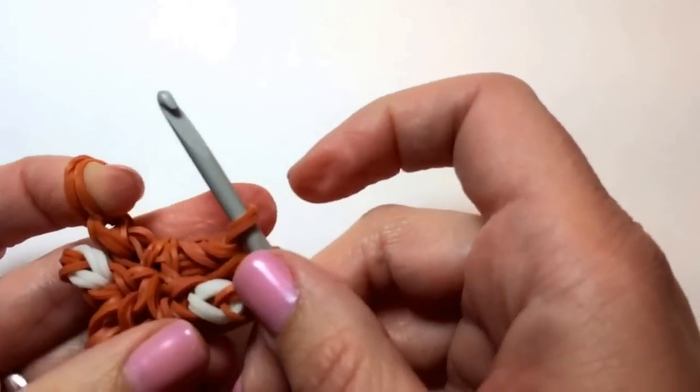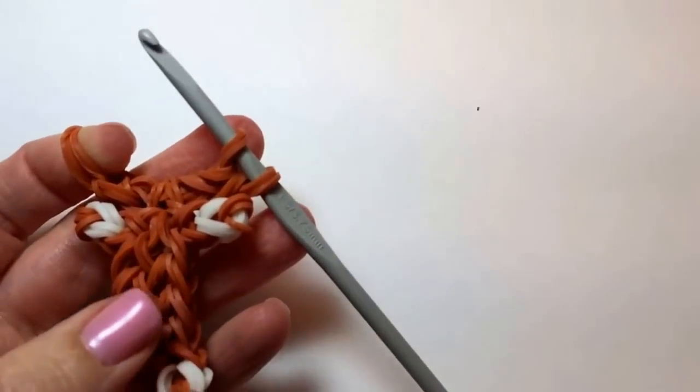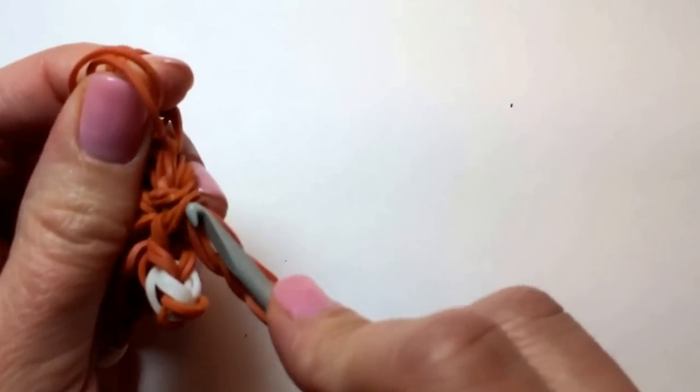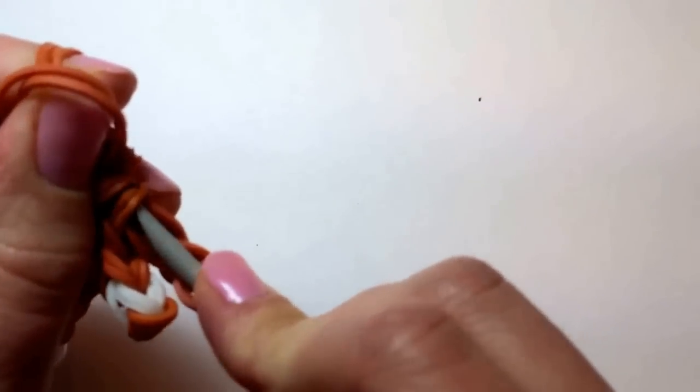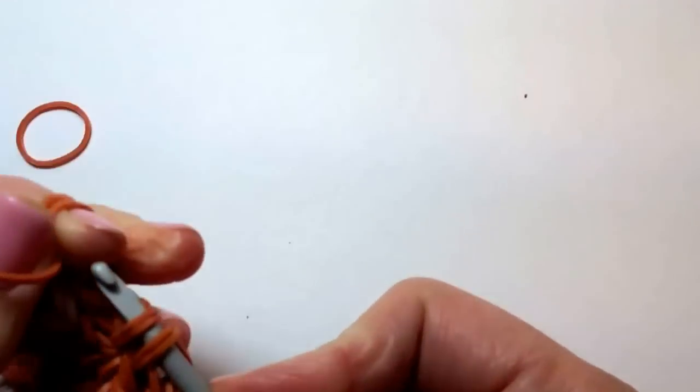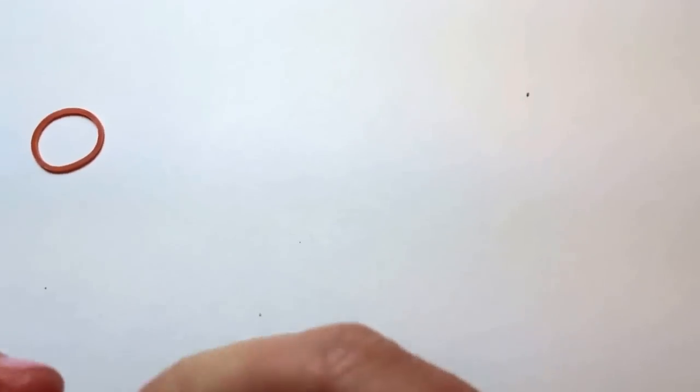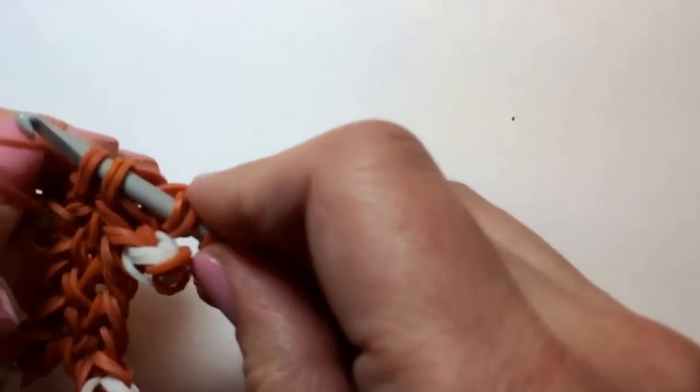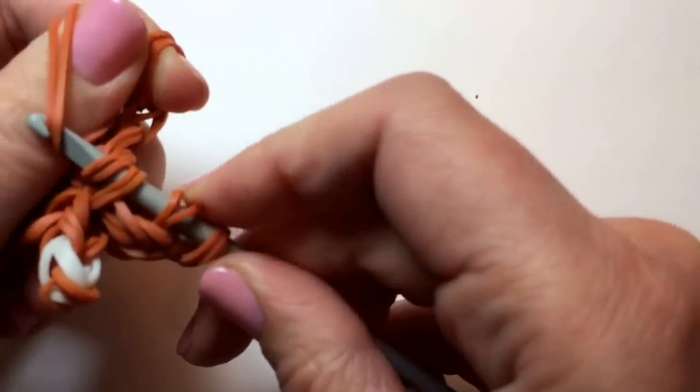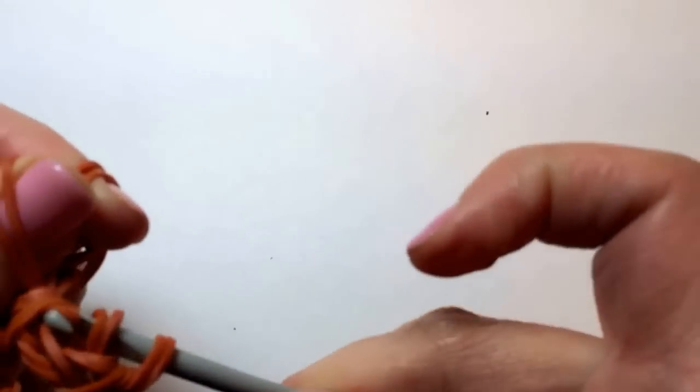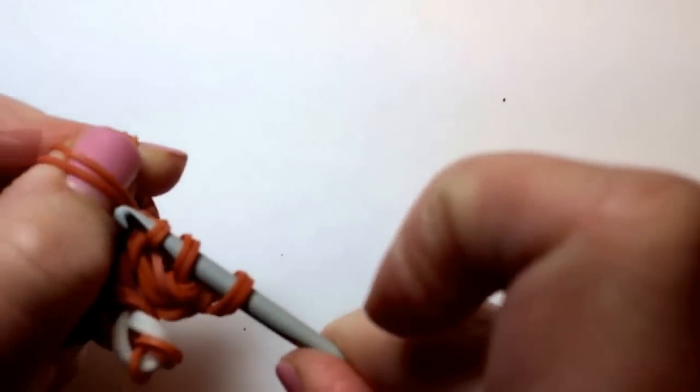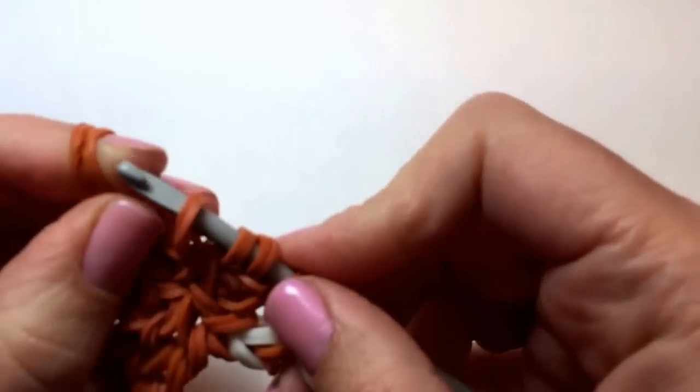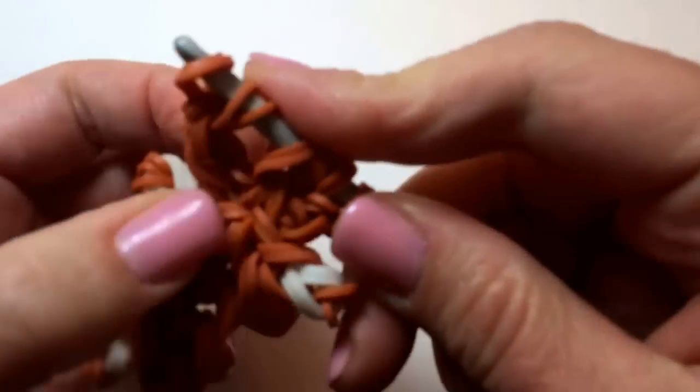To do that, I'm going to take two more brown rubber bands. I'm going to catch this neck here. Dropped one. Bring my two rubber bands through the neck. And then hook those here. Put the other half of my wreath back on.